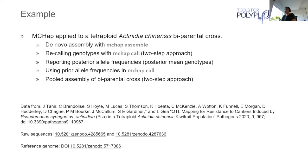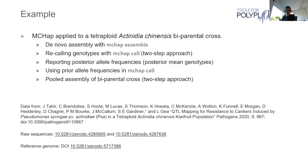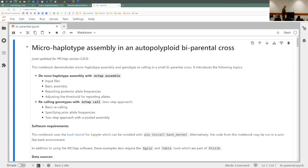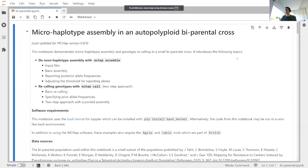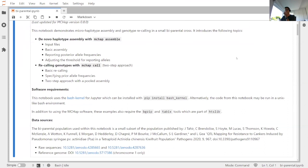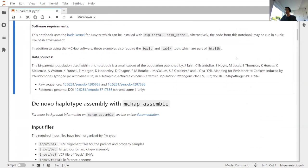I'll switch to the example now. This is based on real data — a published dataset, or a very small subset of one. The example works through de novo assembly using MCHAP assemble, looking at options with that, and then recalling genotypes using MCHAP call, which I refer to as the two-step approach, along with features like the pooled assembly. This is a Jupyter notebook — all the code is bash code, so you can run it with the bash kernel or in a Unix-like terminal shell.